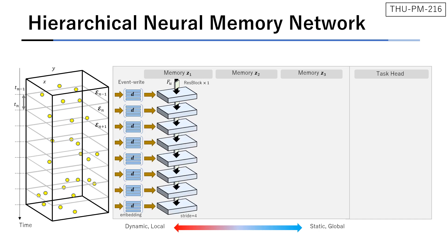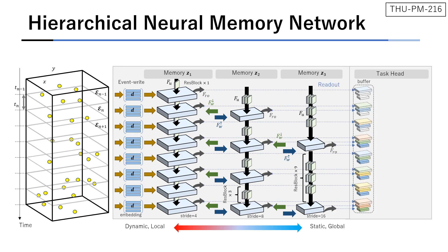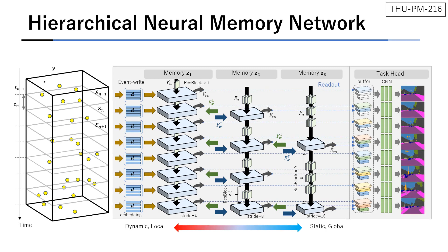Memory Z2 operates at a lower frequency. At every 2 time steps, the Z1 memory state is written into Z2 memory state which is then updated by residual blocks. Memory Z3 executes similar operations at the lowest frequency. The features are read out from each memory and put into a buffer. Finally, the task head computes prediction at every time step based on the features inside the buffer.